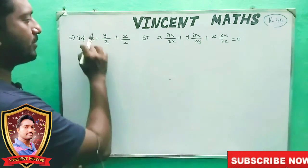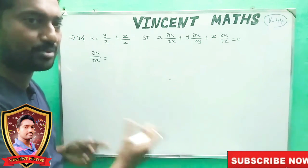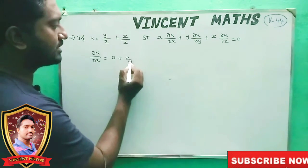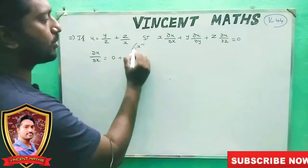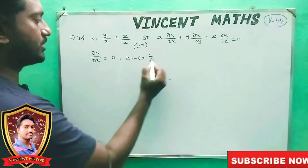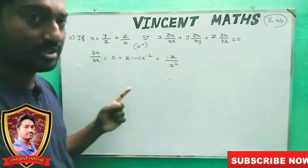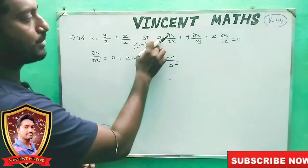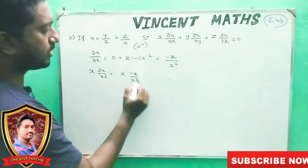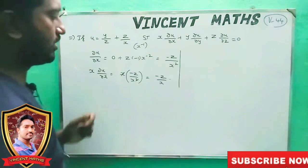dou u by dou x, then differentiate u with respect to x. x is the variable; differentiate x, a is zero. 1 by x — x to the power 1, power value minus 1, gives x to the power minus 2. So the answer is minus z by x squared. Then x into dou u by dou x: x into minus z by x squared, x cancels, giving minus z by x.